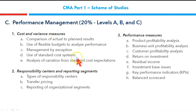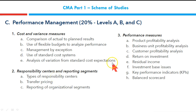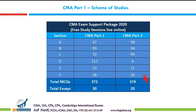So what do we have in Section C? Cost Variance Measures is the first area. We will be completing some part of it, then responsibility centers and reporting, return on investment, residual income, and then certain other performance measures — balanced scorecard, key performance indicators, etc. There are a total of 72 MCQs in Section C and we are planning to finish it off in a couple of lectures. Let's get started straight to the questions.